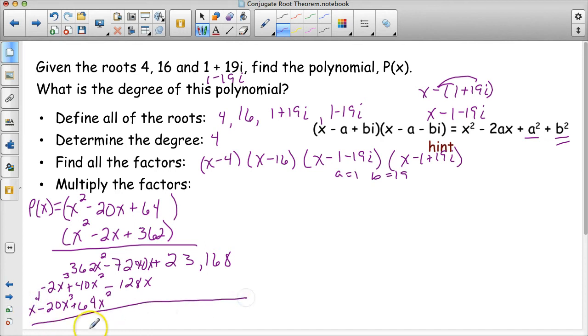Of course, now I have to add all my like terms together. You would do this vertically and you'd have lined paper. It'll be a little bit easier for you to write. I'm going to put my answer over here. So I get x to the 4 minus 22x cubed plus 466x squared minus 7,368x plus 23,168.